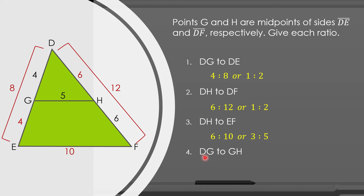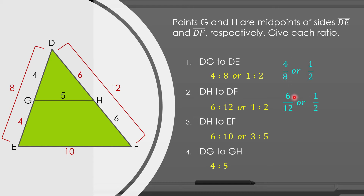Last one, number four: find the ratio of DG to GH. DG is equal to 4 and GH is equal to 5. Therefore, the ratio will be 4 is to 5. We can also use the fraction form: number one is 4 over 8 or 1/2, number two is 6 over 12 or 1/2, number three is 6 over 10 or 3/5, and number four is 4/5.